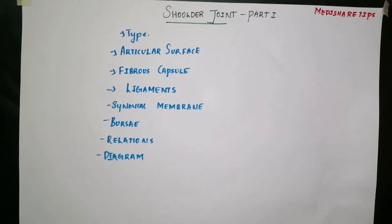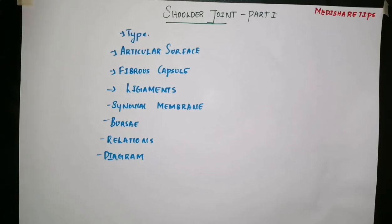In this video we'll be discussing about the shoulder joint. Part one covers the type of joint, articular surfaces, fibrous capsule, ligaments around the shoulder joint, synovial membrane, bursae around the shoulder joint, and the relations of the shoulder joint. Last, we will draw the diagram of the shoulder joint and its relation to various structures. First of all, we'll discuss about the type of joint.